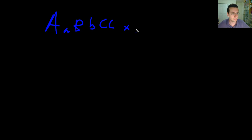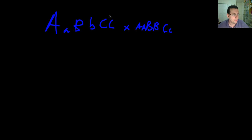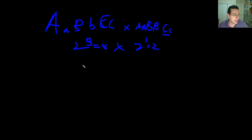What if you're doing a trihybrid cross? This will show up sometimes. If you have two parents like this — all capitals except one lowercase — and you're doing this hybrid cross, you have three different types of hybrids. It's two to the power of three to find out how many gametes, which is eight gametes. For the other parent you only have one hybrid, so it's two to the power of one, which is two. You would need a Punnett square with two rows and eight columns.